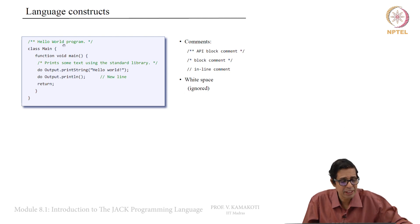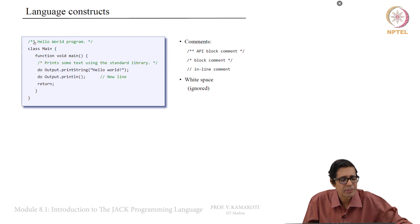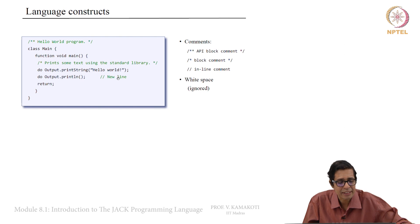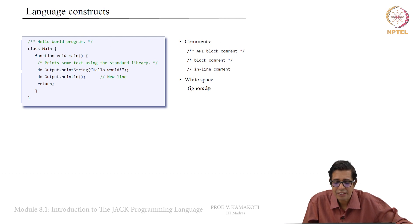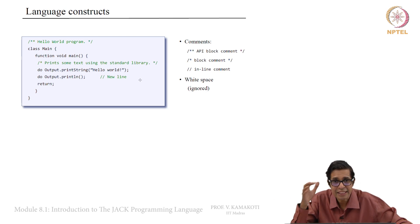All white spaces are ignored in Jack. There are three types of comments: an API block comment (slash star star ... star slash), a simple block comment, and an inline comment. White spaces are only treated as demarcators of characters.